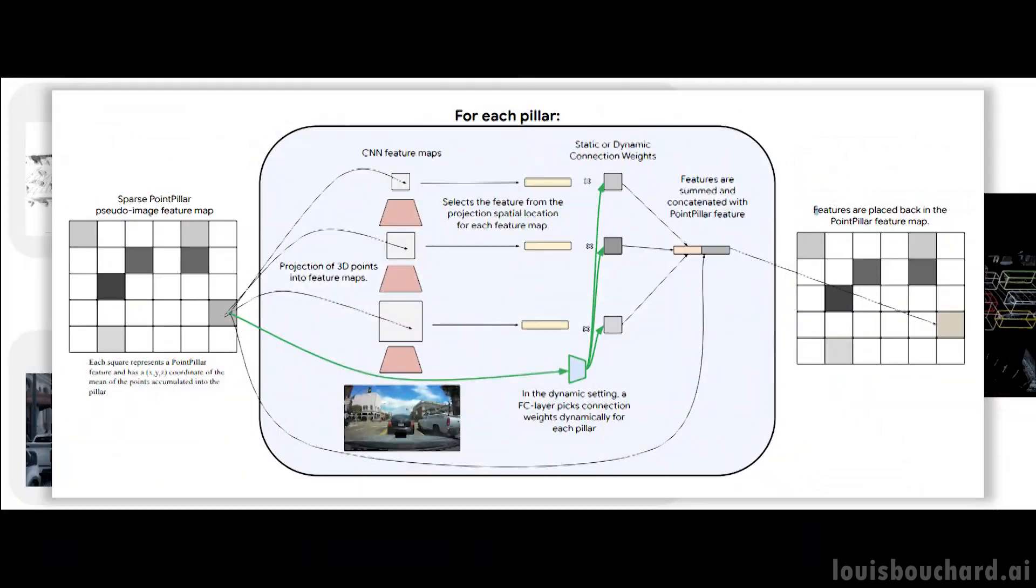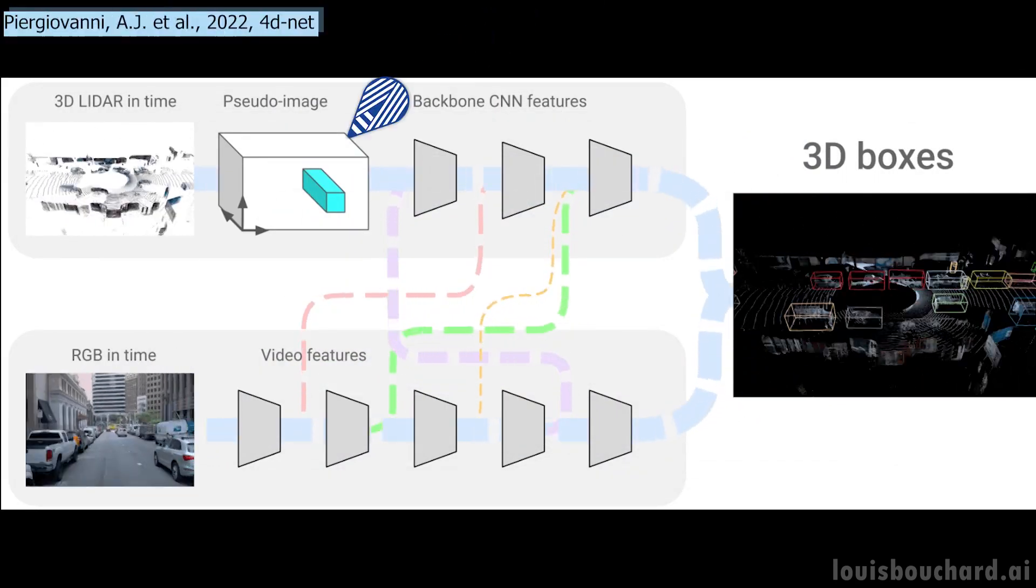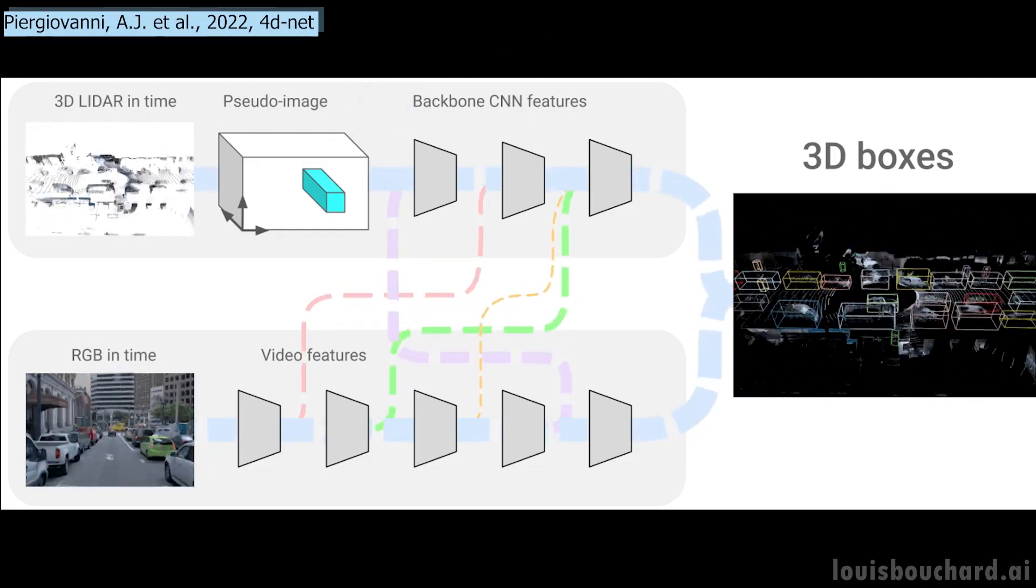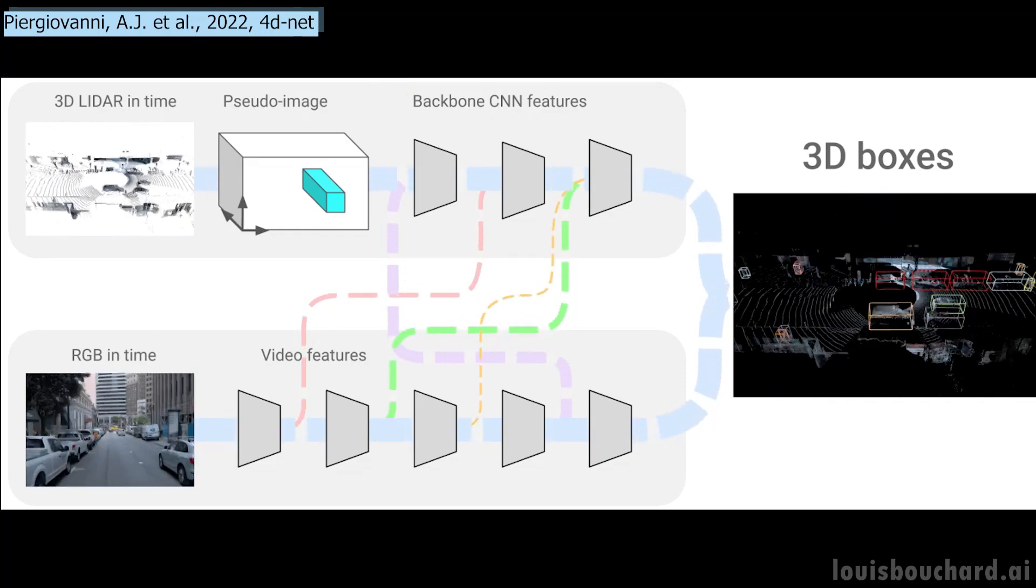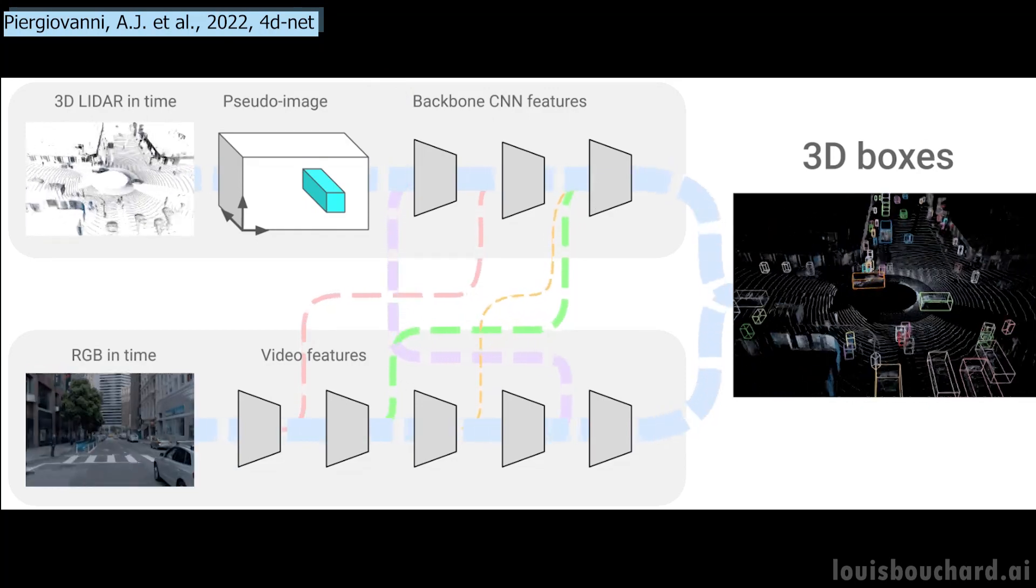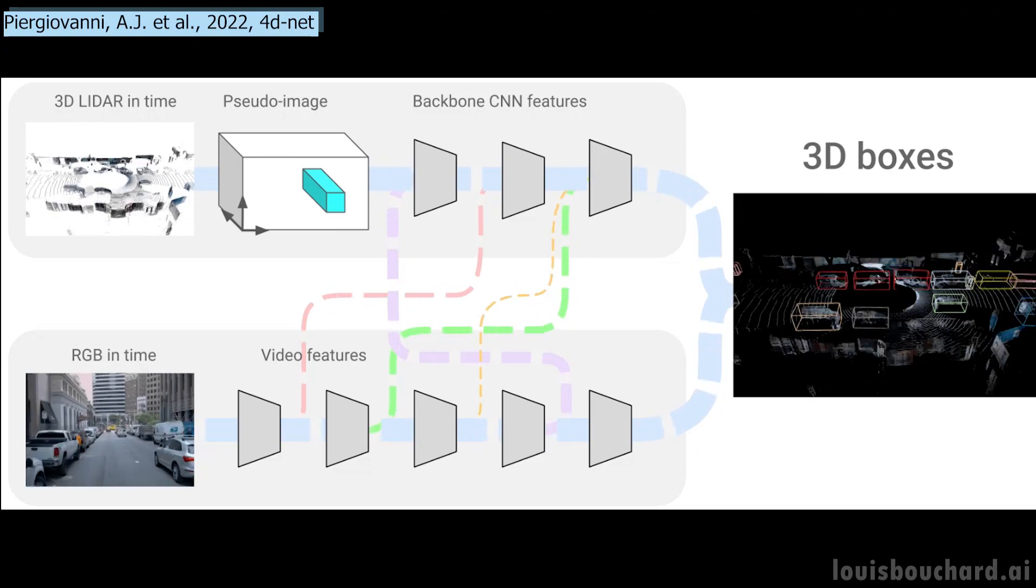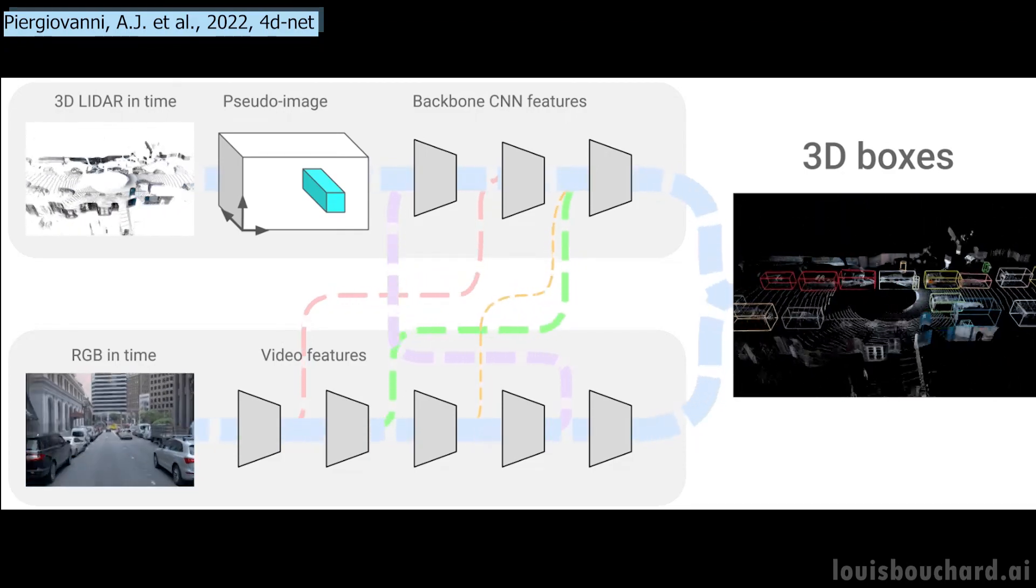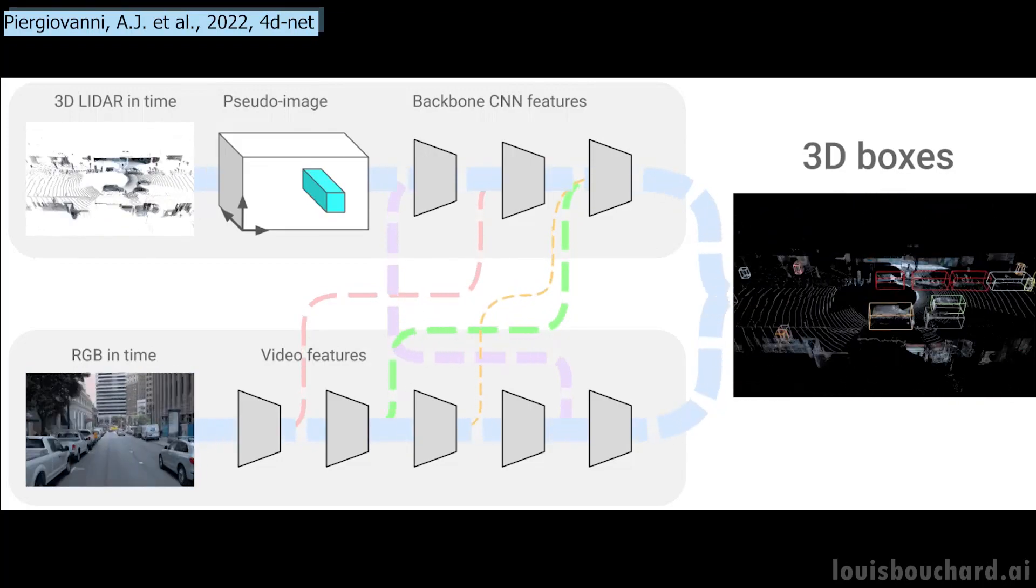You can see this as a pseudo image of the point cloud, as they call it, creating somewhat of a regular image representing the point cloud with the same properties as the RGB images we have in the other branch. Instead of the pixels being red-green-blue colors, they simply represent the depth and positions of the object, xyz coordinates.